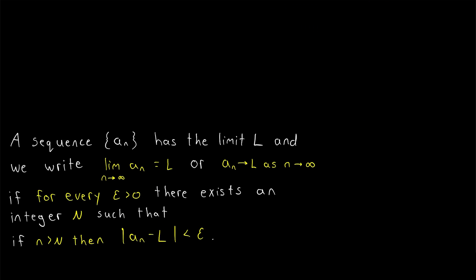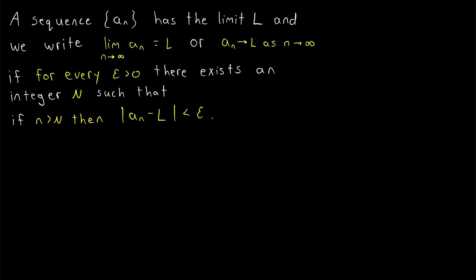Now let's look at the formal definition. A sequence a_n has the limit L, and we write: the limit of a_n as n approaches infinity equals L, or a_n approaches L as n approaches infinity, if for every epsilon greater than 0 — this is the small number, the tolerance — there exists an integer N such that if little n is greater than big N, the distance between the values of the sequence and its limit is less than the tolerance epsilon. Note that distance is a non-negative measure, which is why we have the absolute value bars.